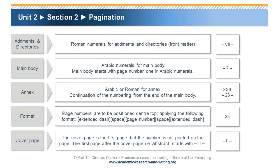The pagination or page numbering is as follows: Roman numerals for front matter and directories, Arabic numerals for the main body, and Arabic or Roman numerals for the annex. The page numbers are to be positioned at the center top. The cover page is the first page, but the number is not printed on the page. The first page after the cover page, usually the abstract, starts with Roman numeral 2.